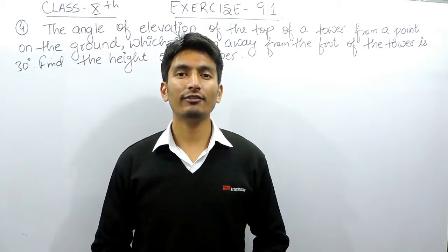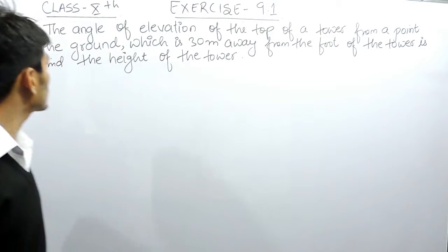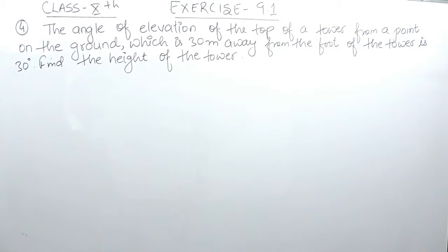Hello everyone, we are from True Math and in this video we are going to solve question number 4 of exercise 9.1. The question says: the angle of elevation of the top of a tower from a point on the ground which is 30 meters away from the foot of the tower is 30 degrees.